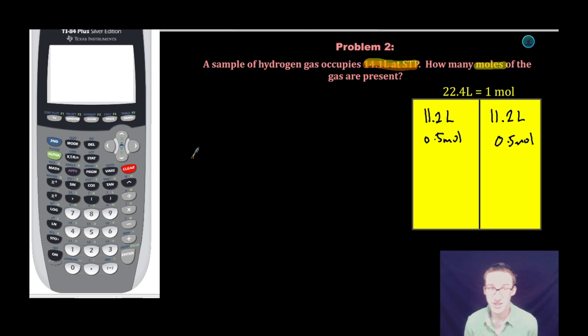A quick conversion will get us where we need to go. I'm going to start with the amount that I'm given in the problem, in this case 14.1 liters of hydrogen gas. I multiply that by a conversion factor. This time I'm going to put liters on the bottom and moles on top. Recognize that because we're at STP, that relationship is one mole of H2 to 22.4 liters.